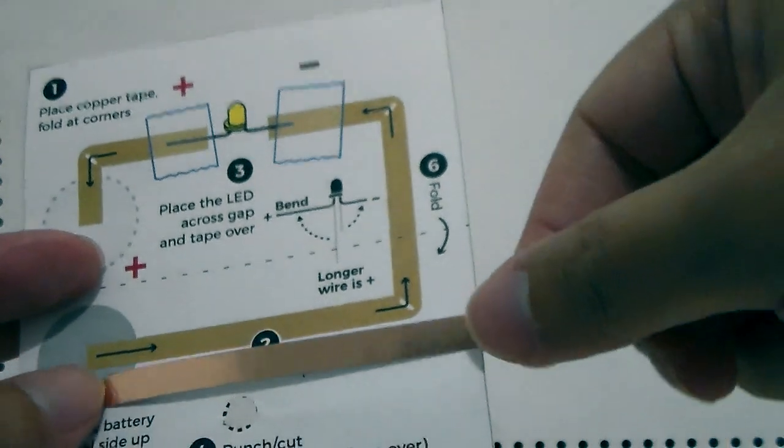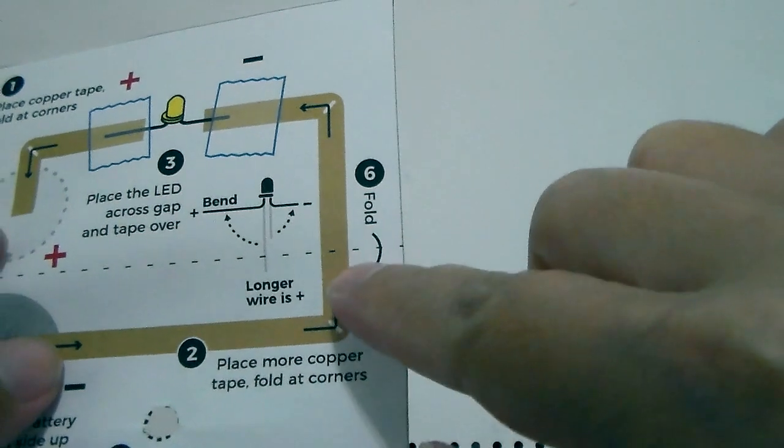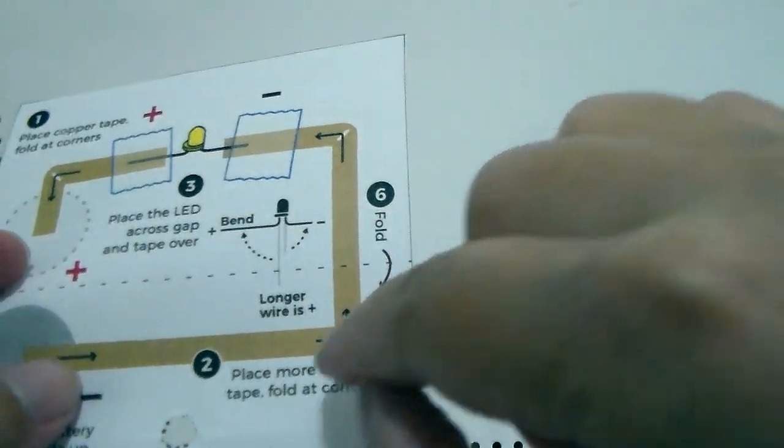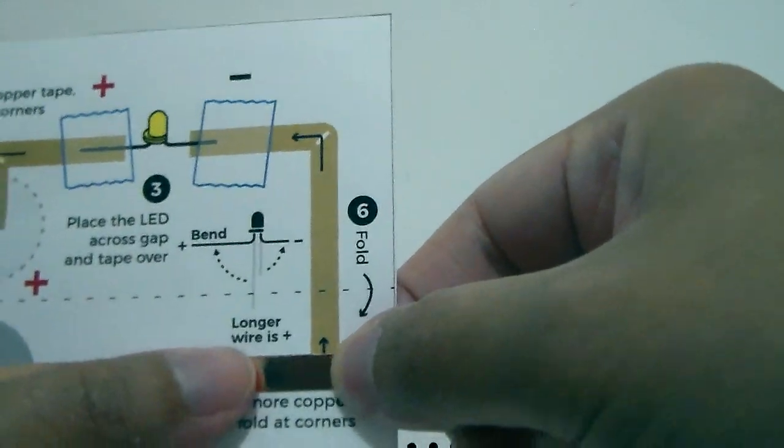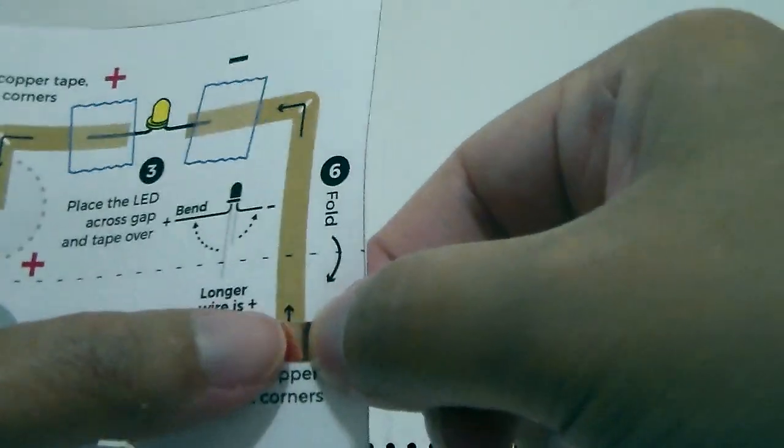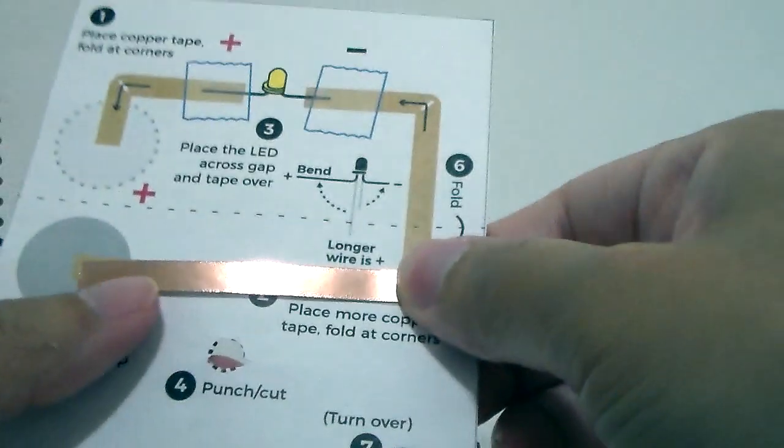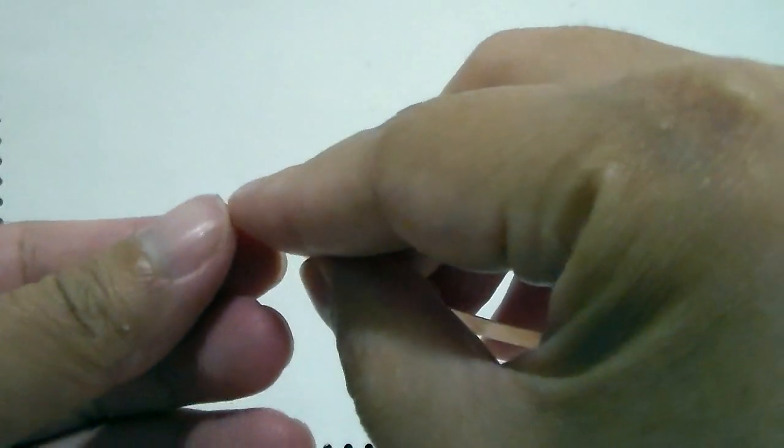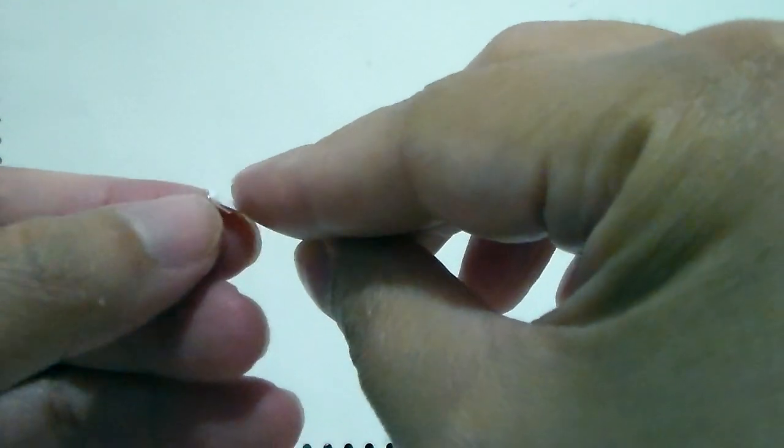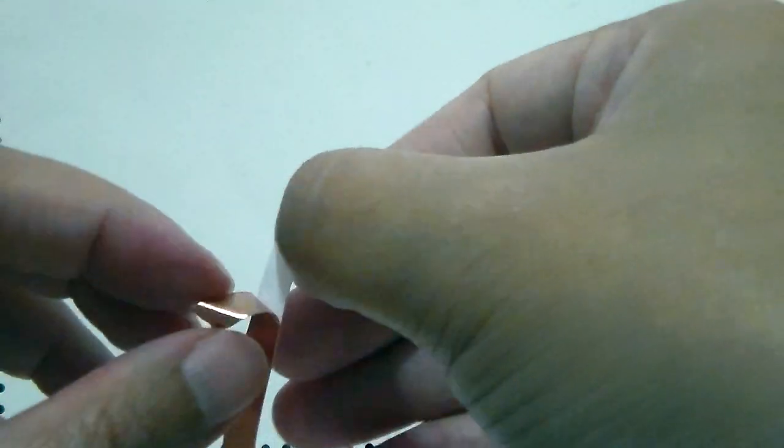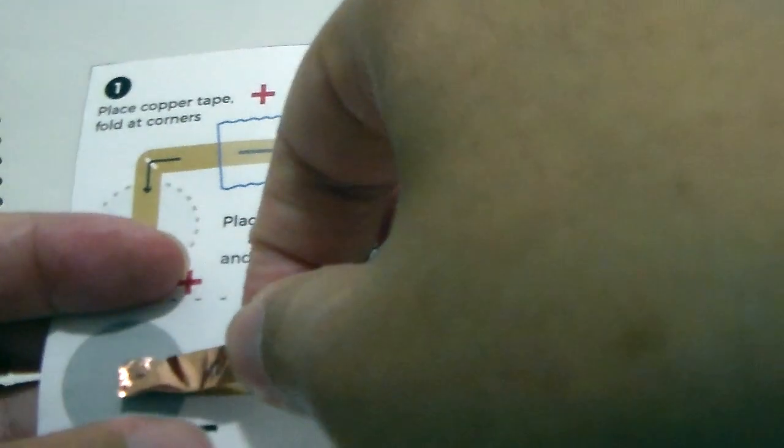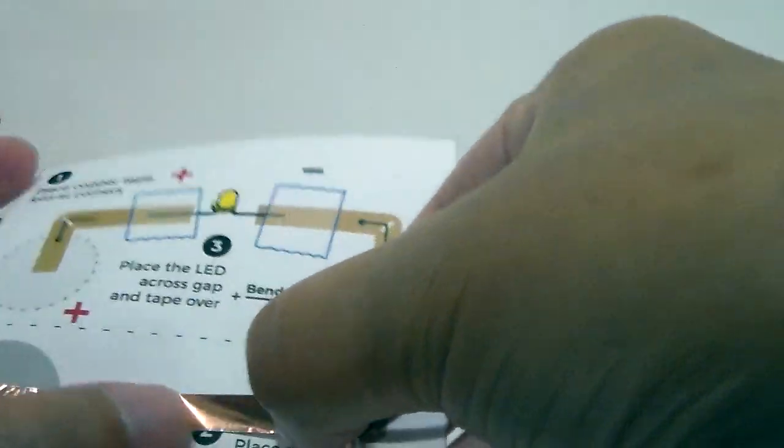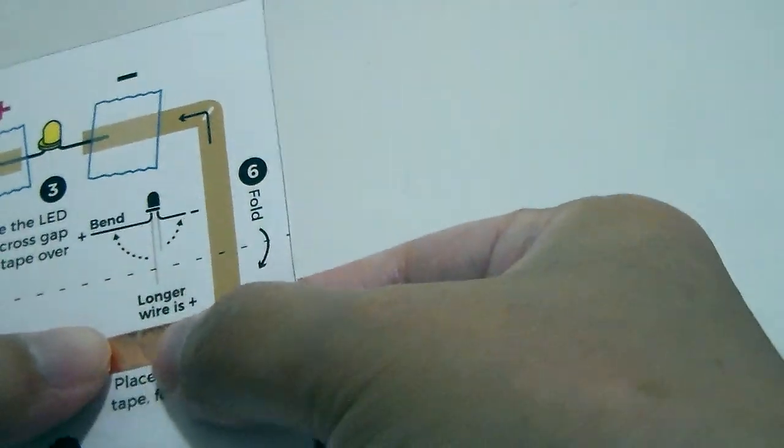So what we're going to do is we're going to cover all the line with the copper tape. So it should say fold at the corner, but you don't have to fold it if you can. You can just rip it off and then just continue on. So it doesn't really matter. You can use scissors as well if you prefer, but you don't have to. So I'm just going to line it up like this and then tear it off one place like so.